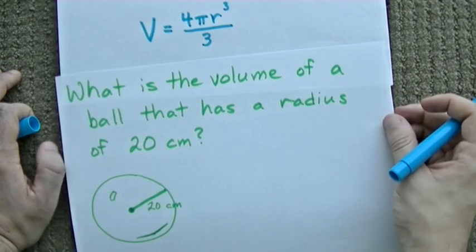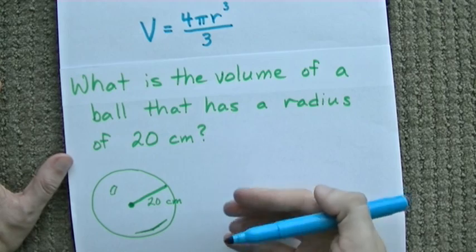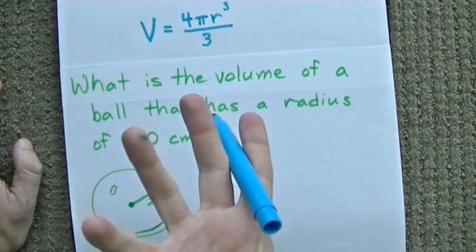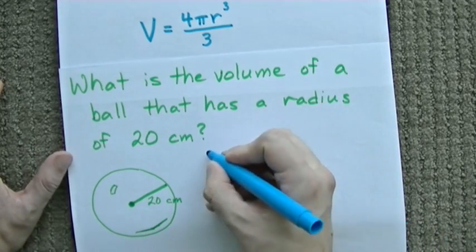Here is a question. What is the volume of a ball that has a radius of 20 centimeters? I've even drawn it for you here. I tried to add these things to show you that it's a full ball, it's not just a random circle. And all we need is the formula.